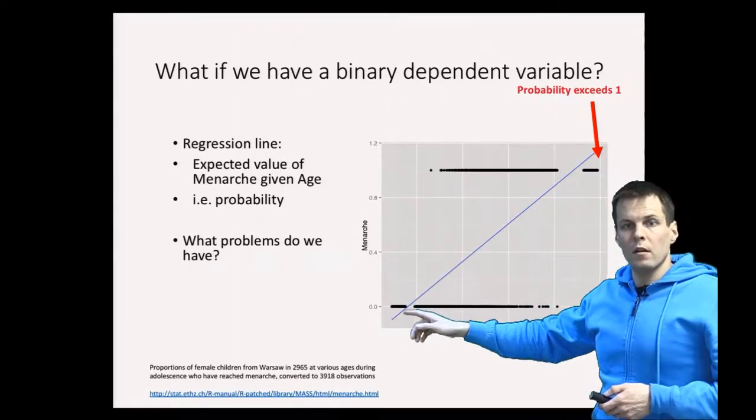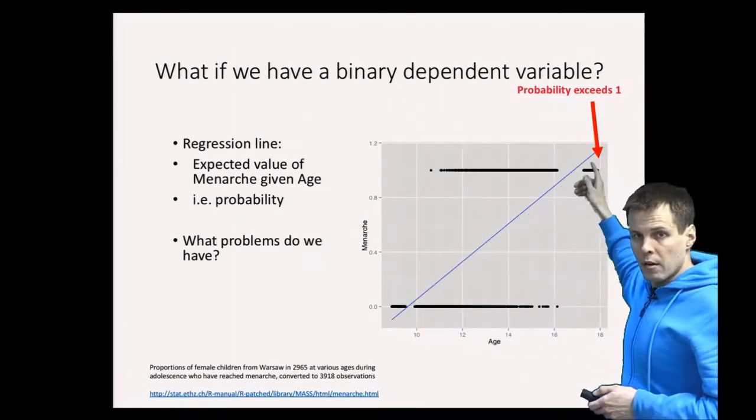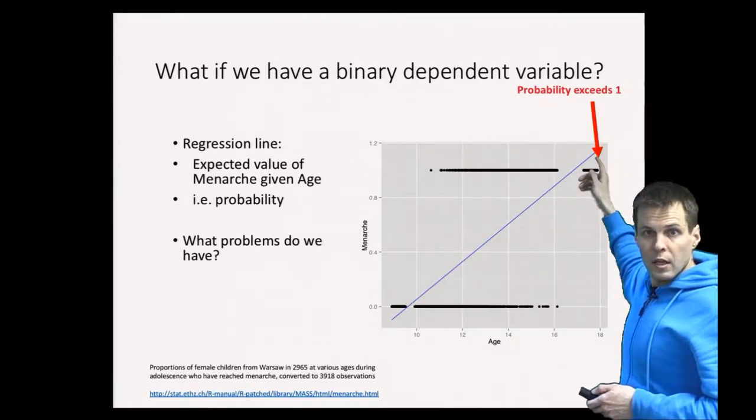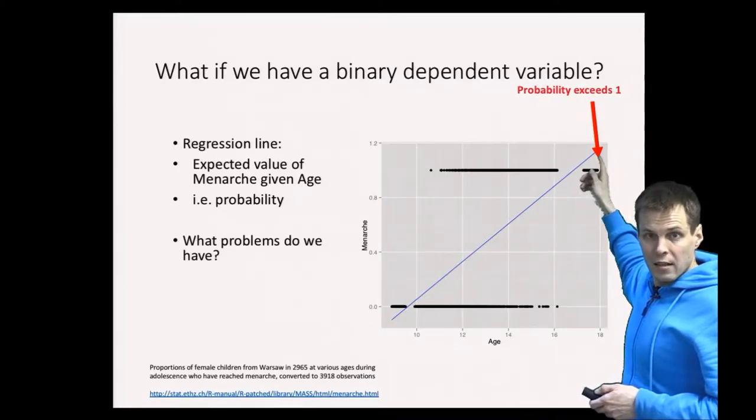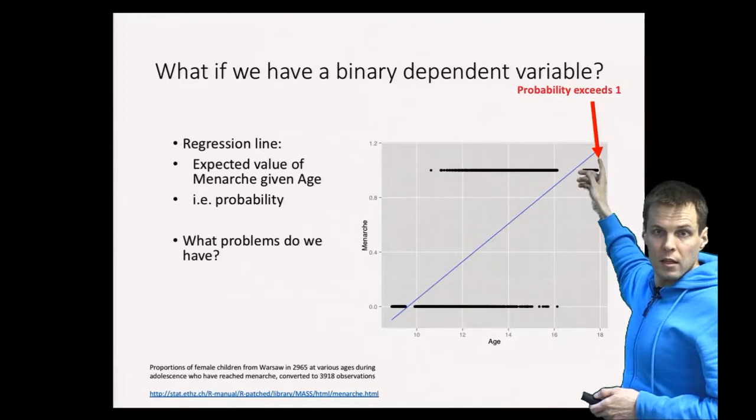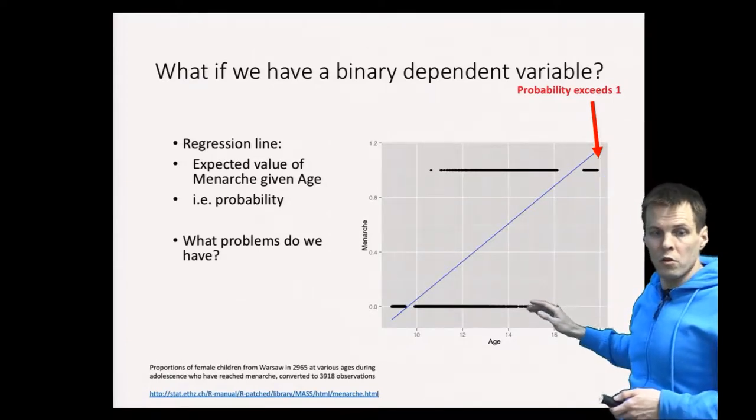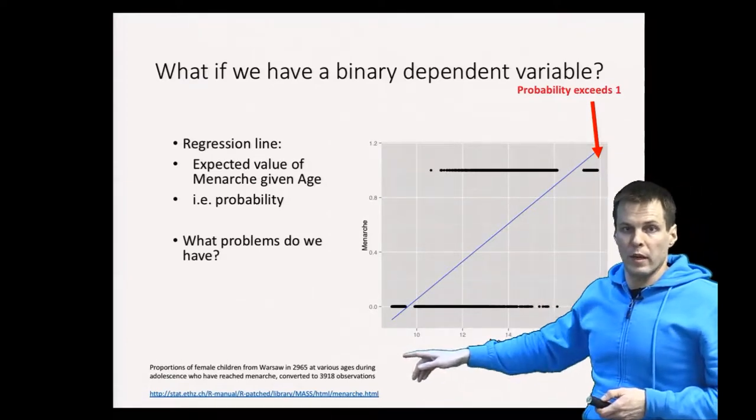When we draw the line, we have a problem here because the predictive probability for girls that are 18 exceeds one, and probability is bound between one and zero. Also, we have negative probability here.